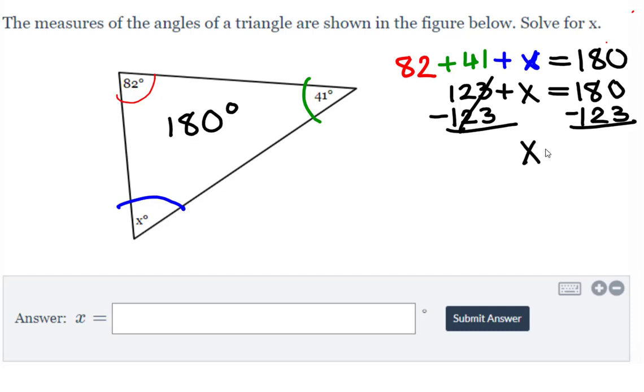It cancels, and now I have x isolated, which is our goal, and 180 minus 123 leaves me with 57. So the missing angle in this case is 57,